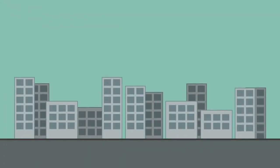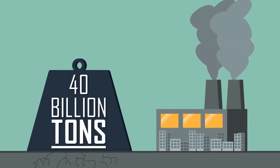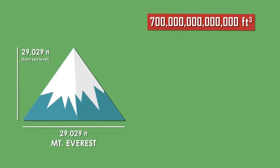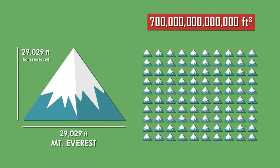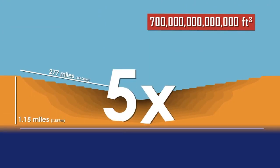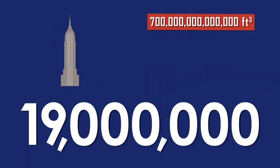Our civilizations produced a devastating 40 billion tons of carbon dioxide last year, which equals 700 trillion cubic feet of CO2. That's a little more than 100 Mount Everest's of CO2. It's enough CO2 to fill the entire Grand Canyon five times. Or it's the equivalence of 19 million Empire State Buildings.